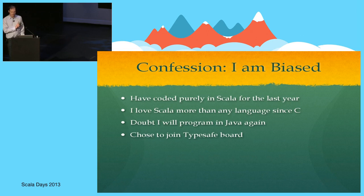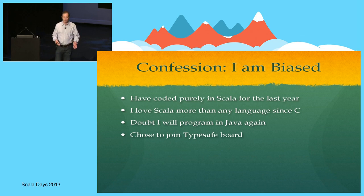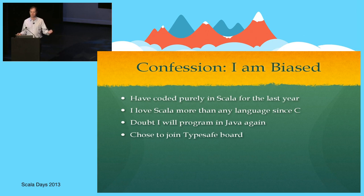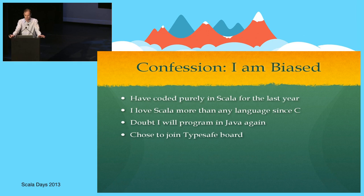I have a confession to make. I am biased, but probably not how you think. Over the last year, pretty much the only code I've written has been in Scala, and I love Scala more than any language I've programmed in since C. C didn't do the full range of things we typically want in a modern language, but everything it did, it did really well. Scala is the first language I've programmed in since C where I have this feeling of profound elegance — this is really nice, very well thought out, it hangs together. I can't see myself programming in Java again.